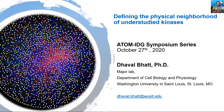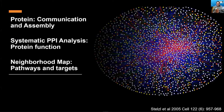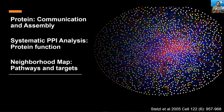Just to provide context: proteins rarely act alone — they constantly communicate with each other and assemble as large functional complexes to perform basic cellular functions. By systematically analyzing protein-protein interactions, we can understand how proteins function and regulate cellular processes. That's why we have been developing neighborhood maps that can link understudied proteins to specific metabolic and signaling pathways, and eventually help identify novel drug molecules.